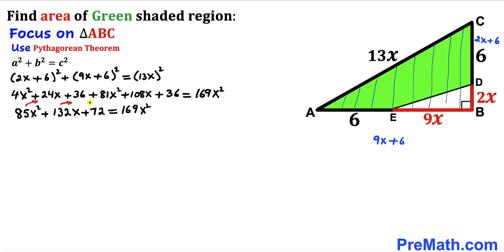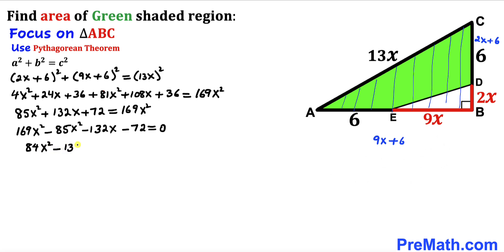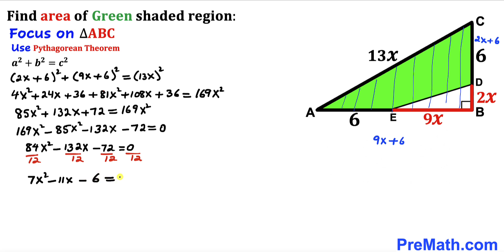Combining like terms and moving all terms to the other side gives us 84x² - 132x - 72 = 0. Dividing every term by 12, we end up with the quadratic equation 7x² - 11x - 6 = 0.